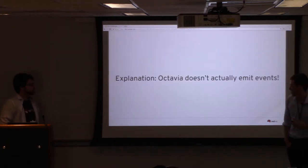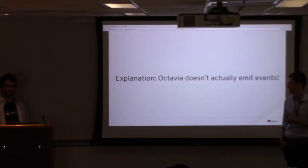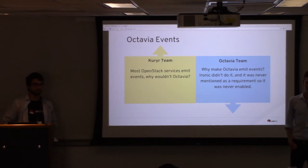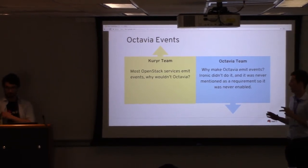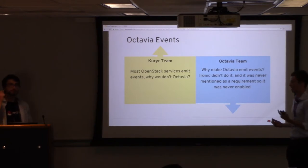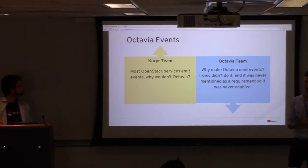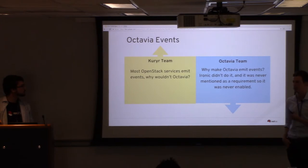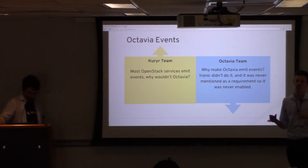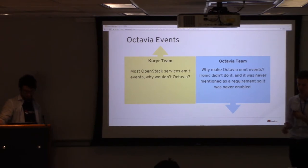Based on those assumptions, there was no way to distinguish Octavia events from actual port events, which was an issue — if the tool can't sort events that way, it defeats the purpose because you'd be sending back hundreds of messages to your Kuryr controller. The explanation, after talking to the Octavia team, is that Octavia doesn't actually emit events like Neutron does. On the Kuryr side, we assumed most OpenStack services emit events. On the Octavia team, they thought 'why make it emit events?' — Ironic, OpenStack's experimental provisioning tool, didn't do it, and it was never a requirement, so it was never enabled. Both sides had reasonable expectations — there was just this miscommunication.